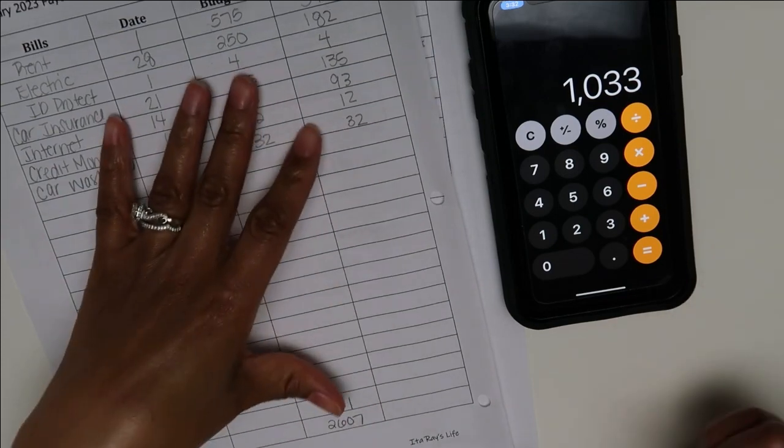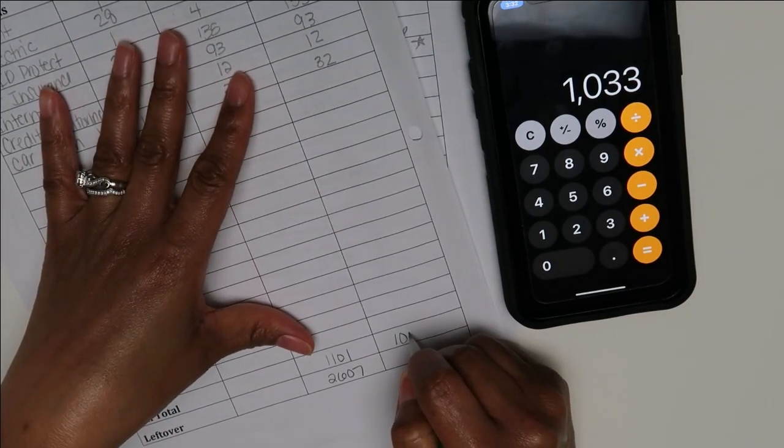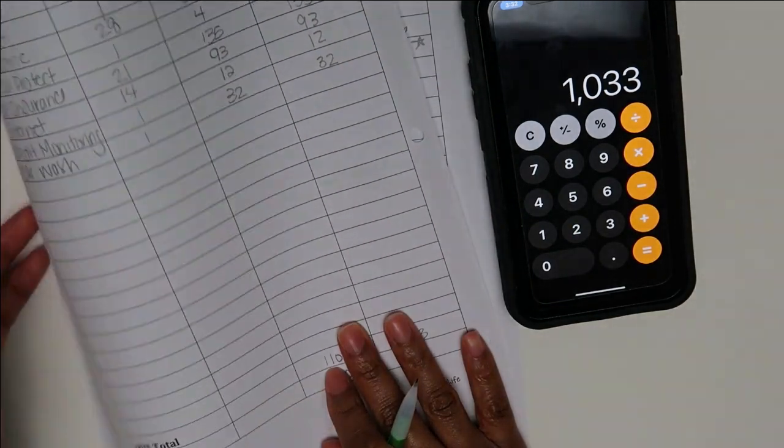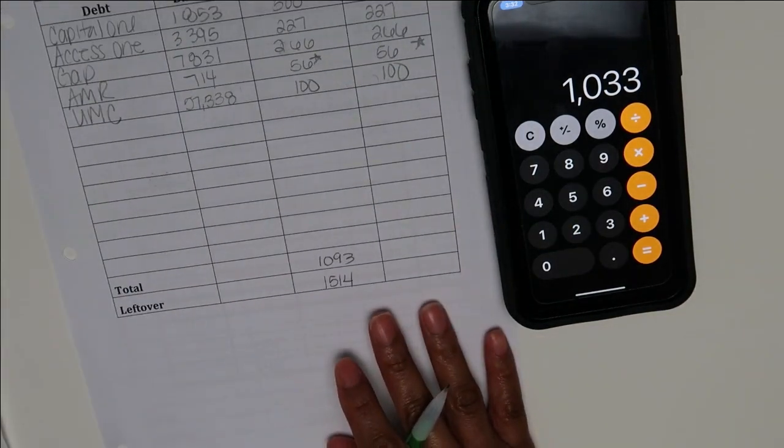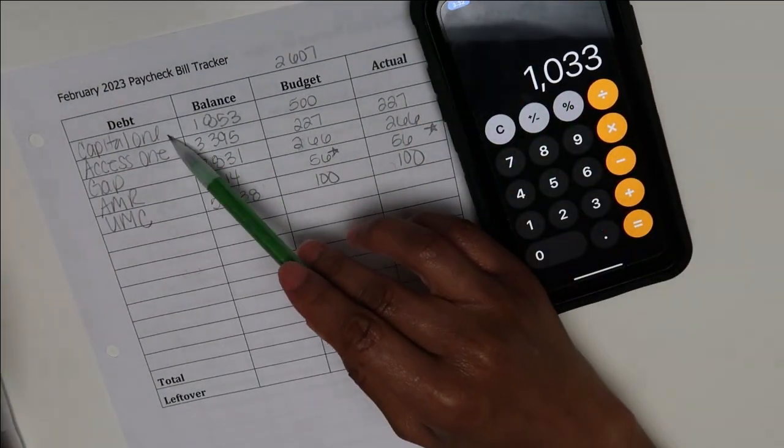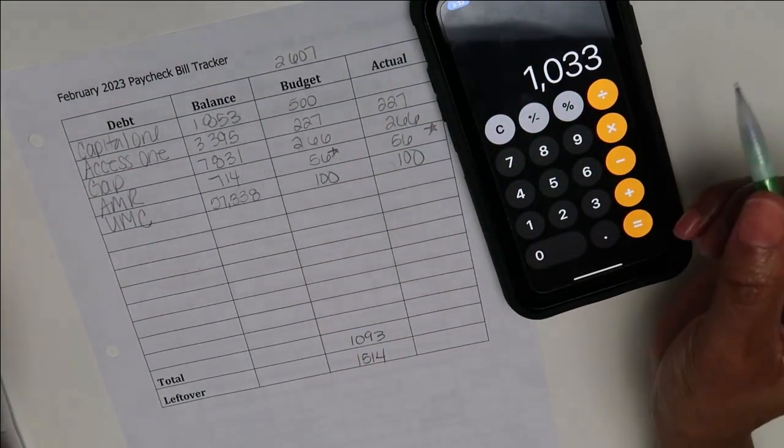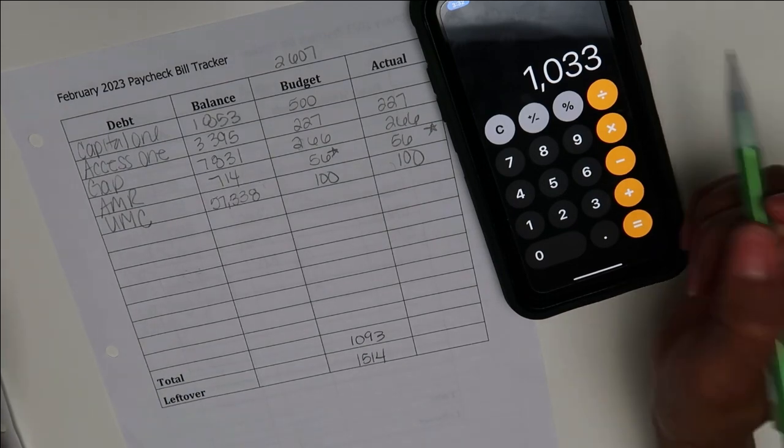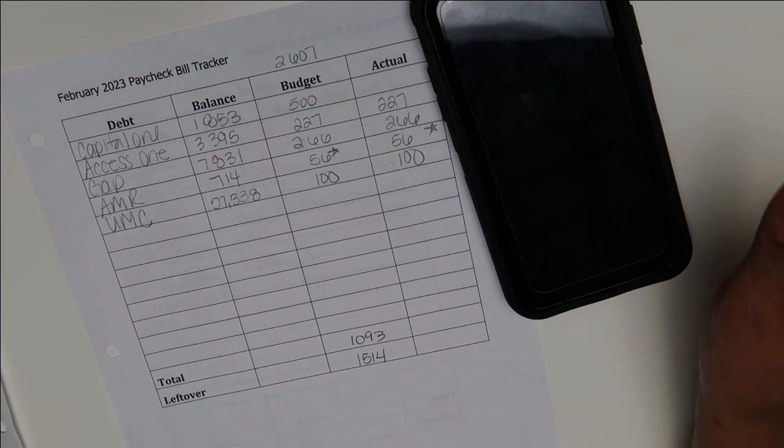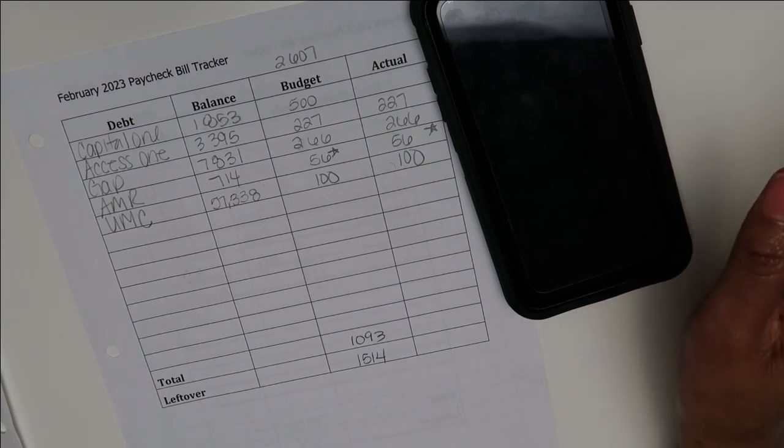All right, so that totaled $1,033. Of course, I don't have any from my income for this month, so we're going to leave that as is. Now you guys, I have been messing up horribly this month. This balance has gone up. I don't know what's going on. I have to really get myself together, like seriously. I'm thinking what did I spend money on? I just need to get it together.